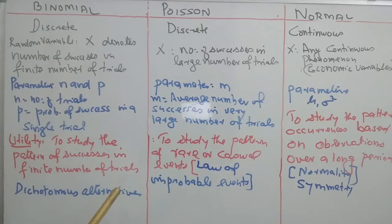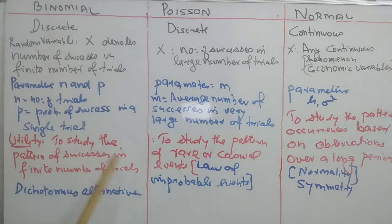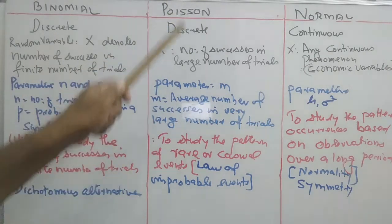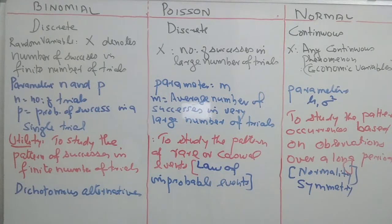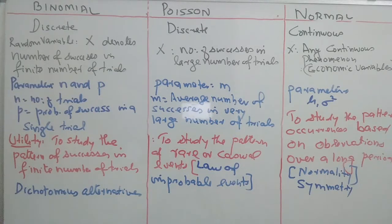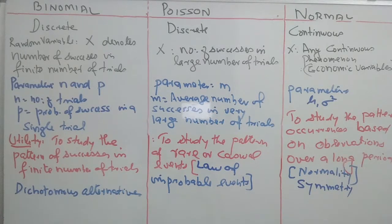Binomial is used to study the probability behavior of dichotomous alternatives — either good or bad, success or failure, male or female — studying the pattern of success in a finite number of trials. Poisson distribution is used to study the pattern of rare or casual events where the possibility of occurrence is very large but the actual number of occurrences is very small; it is termed the law of improbable events. Normal distribution deals with symmetry and normality, formulated over a long period of time to study the pattern of occurrences based on observations over time.